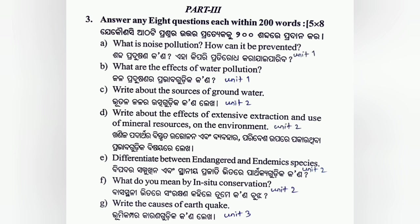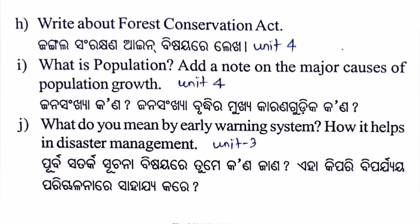Write about the effects of extensive extraction and use of mineral resources on the environment — Unit 2. Differentiate between endangered and endemic species — Unit 2, biodiversity. What do you mean by in-situ conservation? — Unit 2, conservation of biodiversity. Write the causes of earthquake — Unit 3, disaster management. Then write about the Forest Conservation Act.